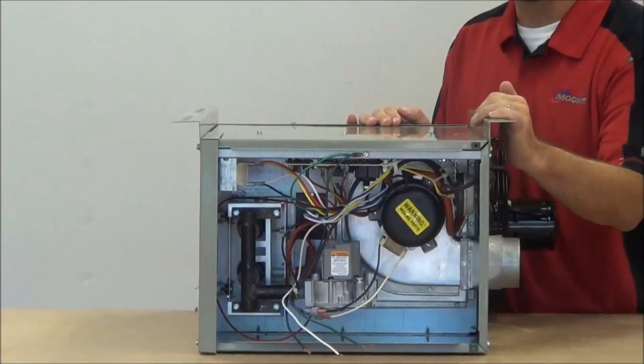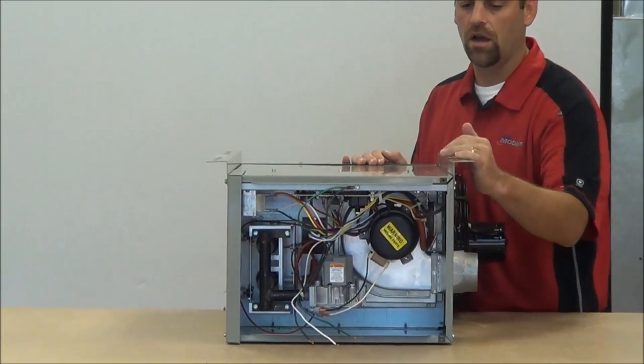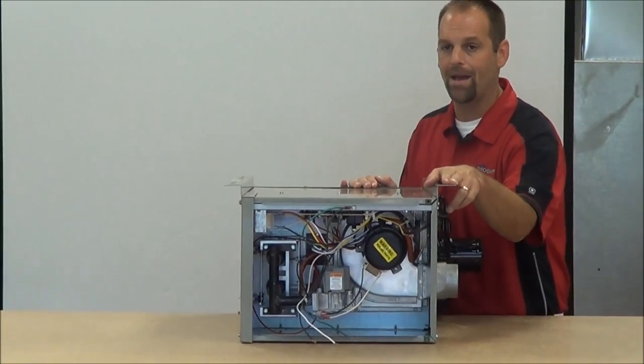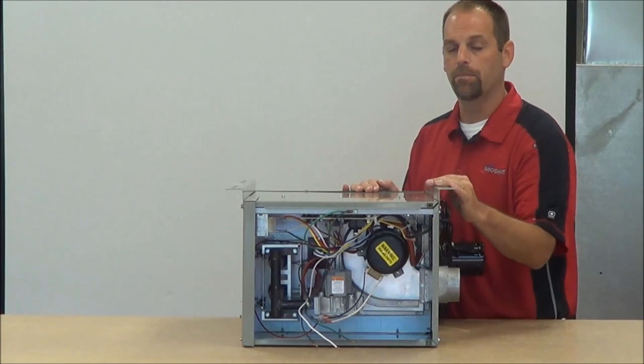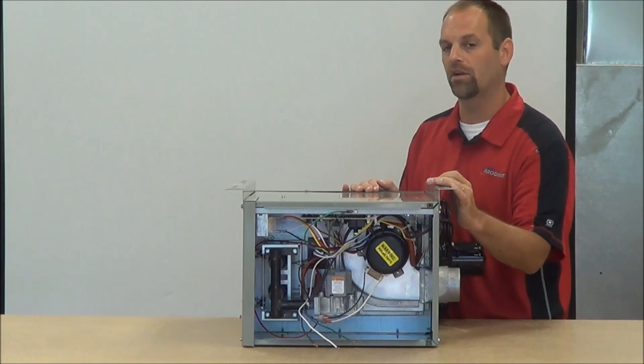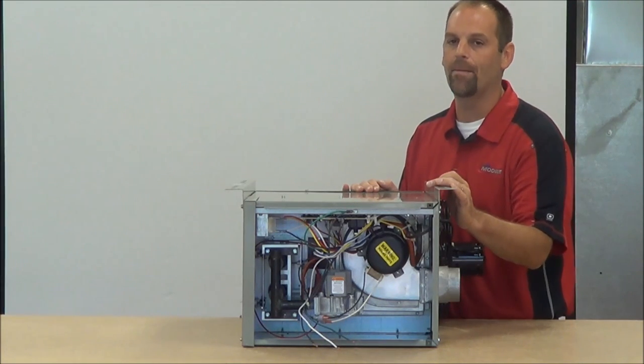And then the next thing we want to check is the polarity of this wire. What will happen is, the unit will start up normally. The burners will fire off, they'll run for approximately three to four seconds, and they'll drop out.